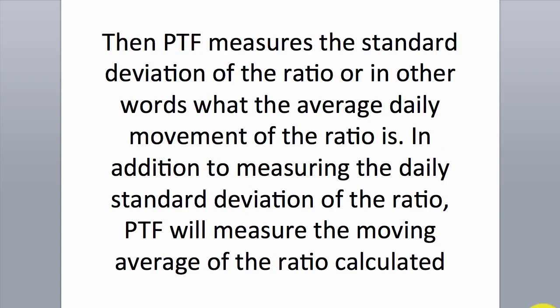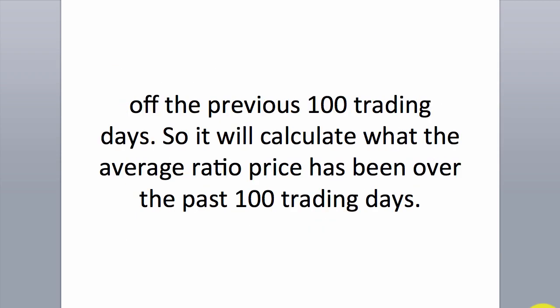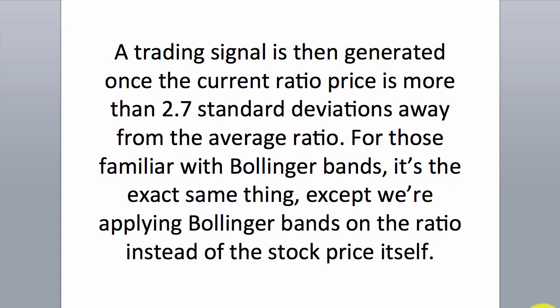Then PTF measures the standard deviation of the ratio — in other words, what the average daily movement of the ratio is. In addition to measuring the daily standard deviation, PTF will measure the moving average of the ratio calculated off the previous 100 trading days, giving the average ratio price over that period. A trading signal is then generated once the current ratio price is more than 2.7 standard deviations away from the average ratio.